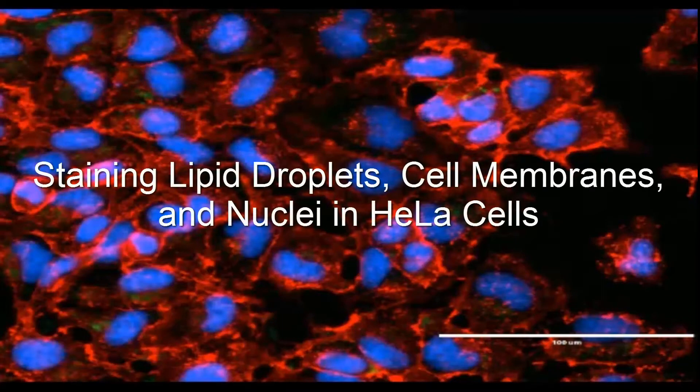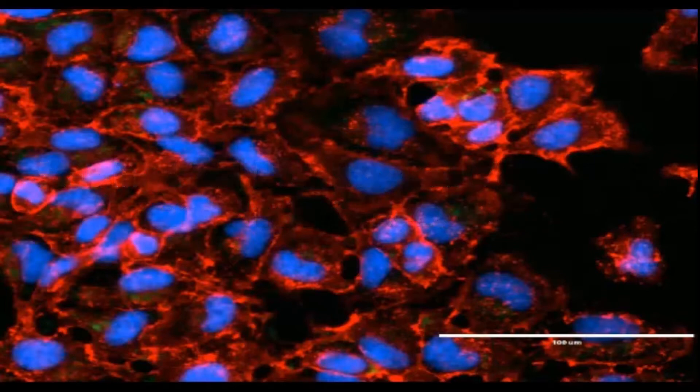For this video, we are going to explain how to stain lipid droplets, the cell membrane, and the nucleus of HeLa cells from our fatty acid experiment. Here is an image of cells that have had their lipid droplets, cell membrane, and nucleus stained.